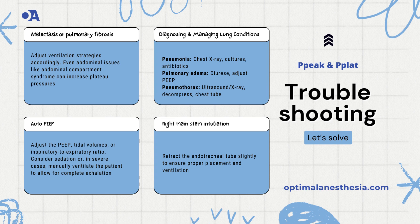Next up, auto-PEEP: this occurs when air gets trapped in the lungs because the patient doesn't have enough time to exhale fully — it's like trying to fill a balloon without letting any air out. Fix this by adjusting the PEEP, reducing tidal volumes, or changing the inspiratory-to-expiratory ratio. In severe cases, you might need to manually ventilate the patient to allow for complete exhalation. Sometimes right main stem intubation can be the issue: if the endotracheal tube goes too far, it ventilates only one lung, leading to high pressures.